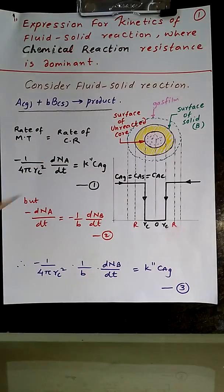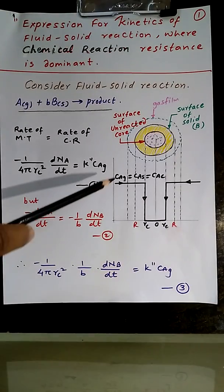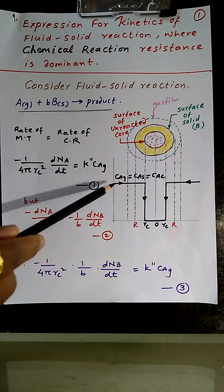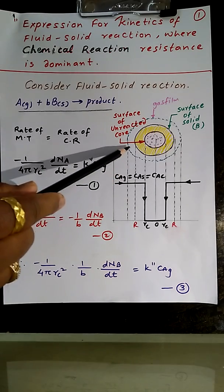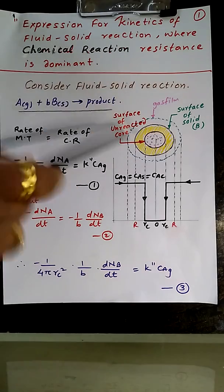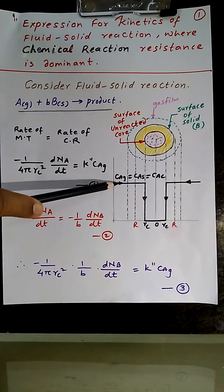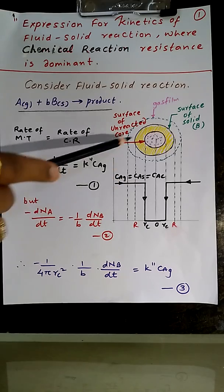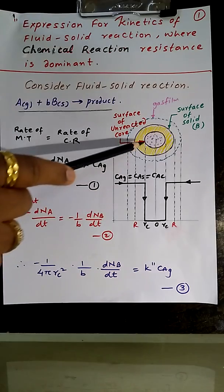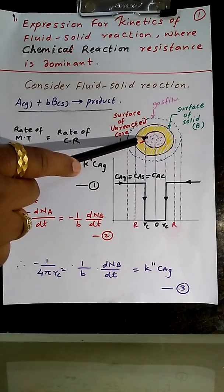We are also familiar with this diagram. But here, with respect to the previous video where the gas film is dominant, what is the difference? Here gas film is not providing any resistance, and the ash layer is not providing any resistance.